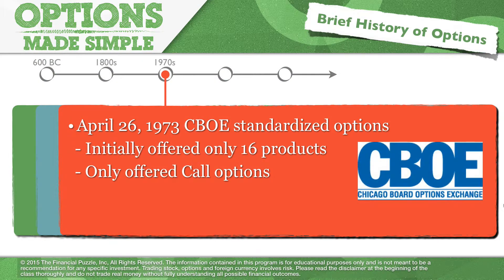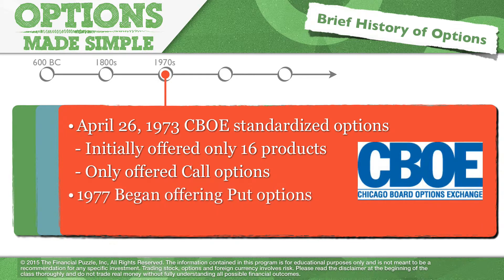At that time, the CBOE initially only offered 16 products, and there were only call options — no put options. Then just a few years later, by 1977, they started offering put options as well.